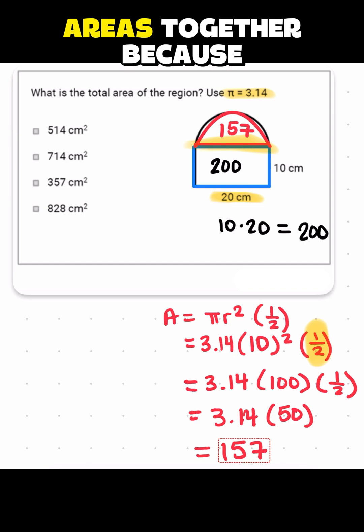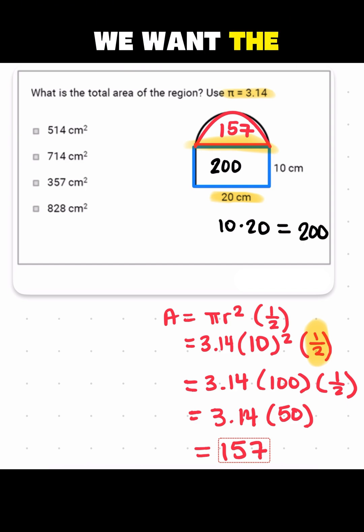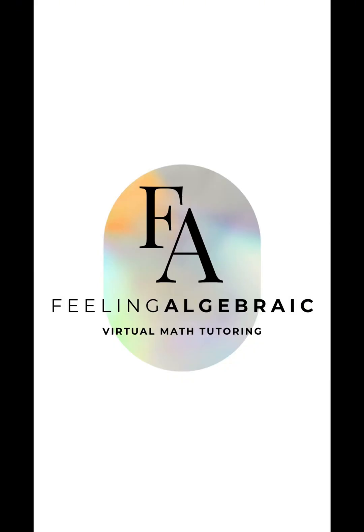And now you just need to put those two areas together because we want the total area. So the total area would be 357. If you need help with math, book a session with me online or in person at feelingalgebraic.com.